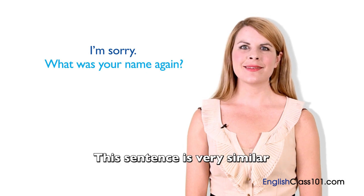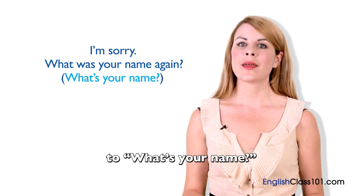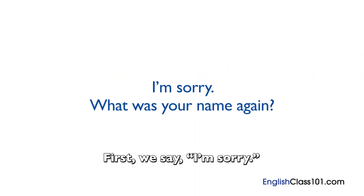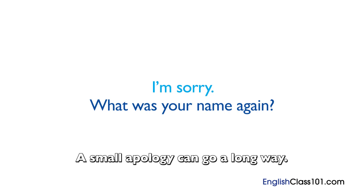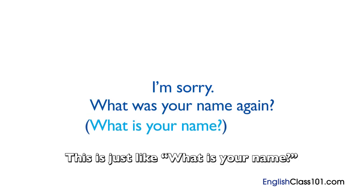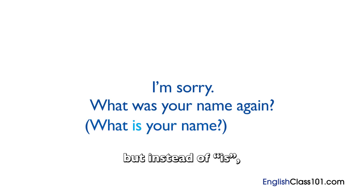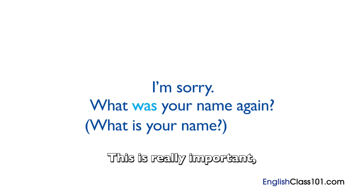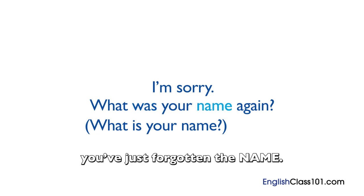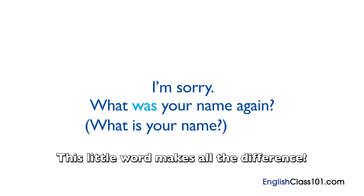This sentence is very similar to "what's your name" but it has three important differences. First, we say "I'm sorry" — a small apology can go a long way. After that, we say "what was your name?" This is just like "what is your name?" but instead of "is," we use the past tense "was." This is really important, as it tells the other person that you remember meeting them — you haven't forgotten him or her, you've just forgotten the name. This little word makes all the difference.